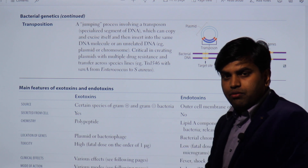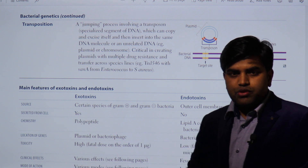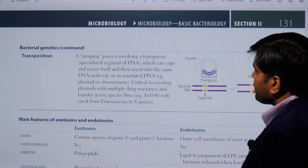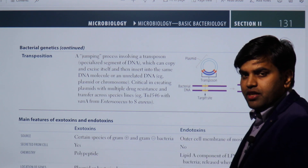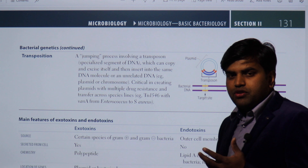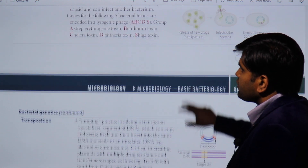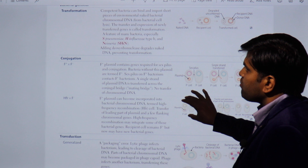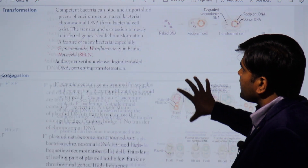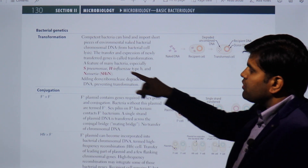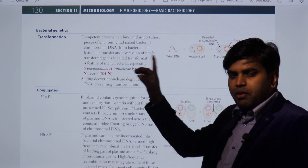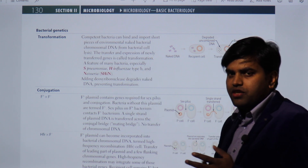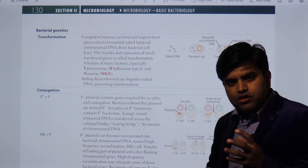Continuing our review of USMLE Step 1 microbiology, we were on page 131 previously, talking about bacterial genetics. Among the topics covered, we discussed transposons. Let me revise bacterial genetics once again because it is important for one of our questions. Bacterial genetics has three main methods: transformation, conjugation, and transduction.